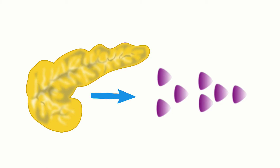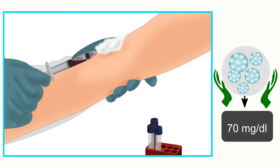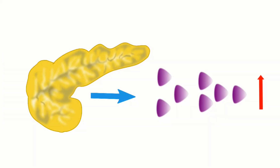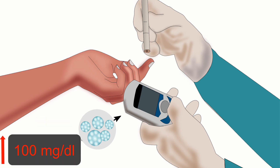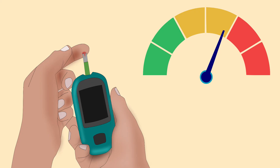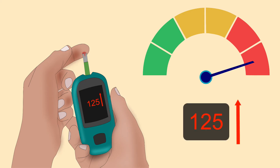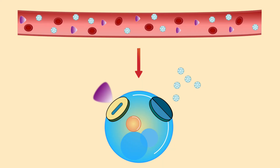The pancreas' response to insulin resistance is to produce more units of insulin, to keep glucose levels in the normal range. Since insulin resistance is not treated, more and more insulin is produced. Soon, even higher levels of insulin are not able to keep normal glucose levels. Eventually, blood glucose levels will be higher than 100 units, which is diagnosed as pre-diabetes. Then it progresses further and blood glucose levels rise beyond 125, which is diagnosed as type 2 diabetes.